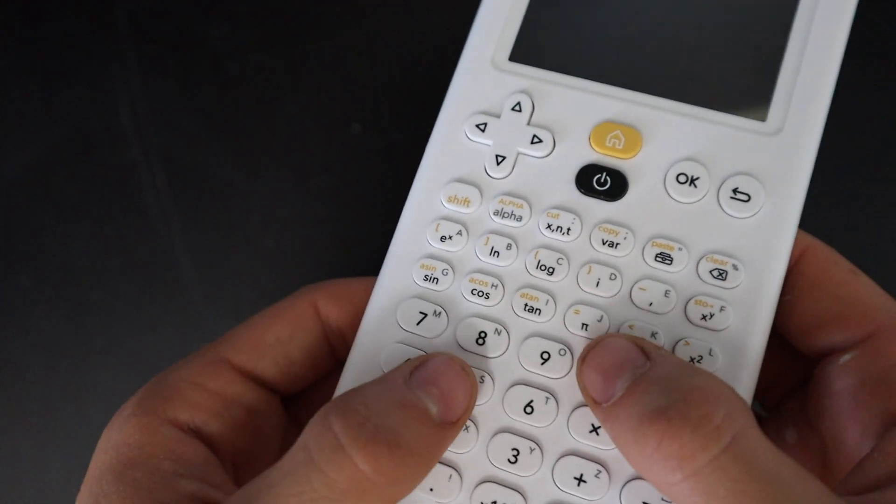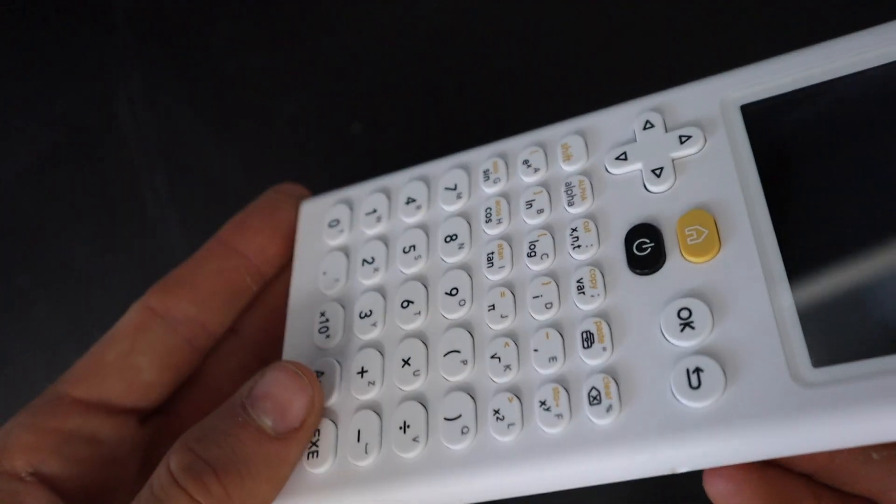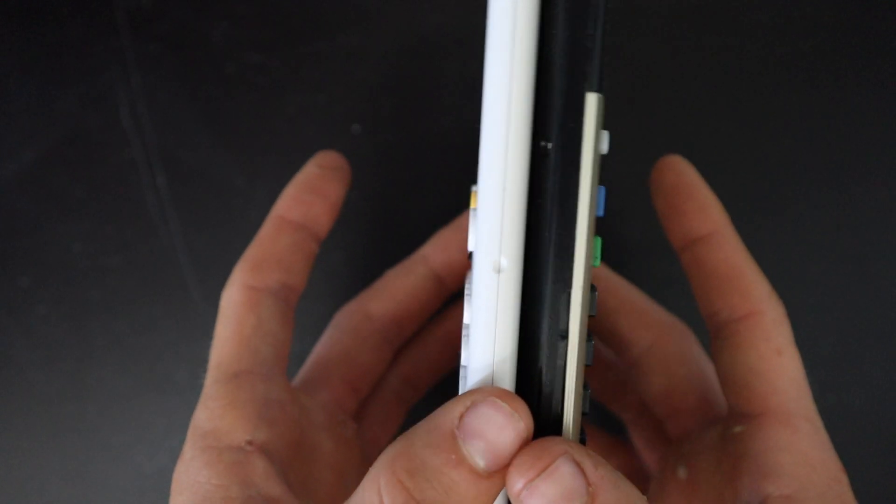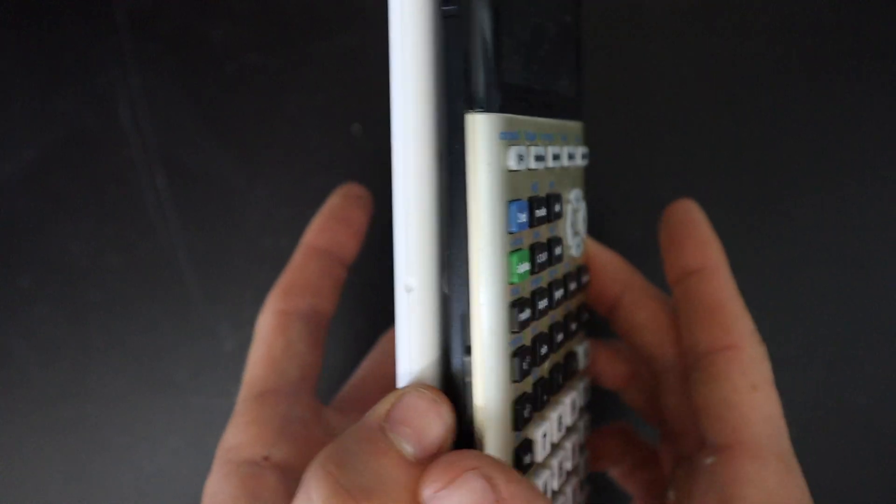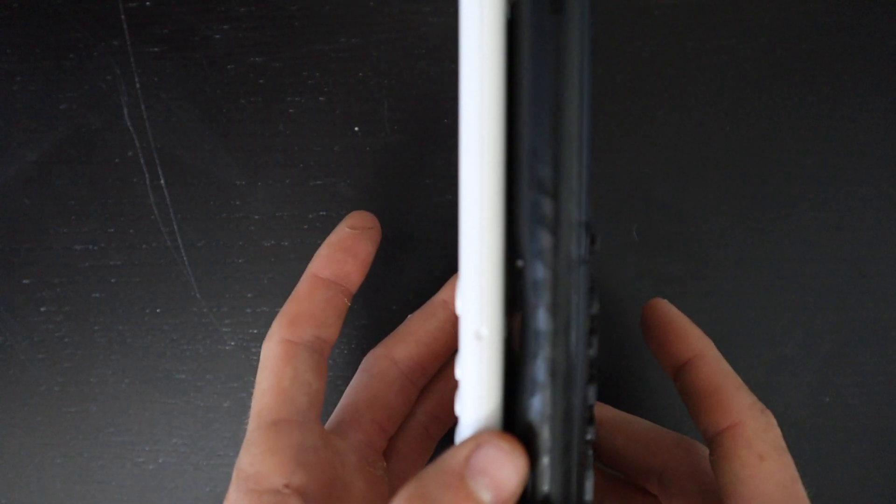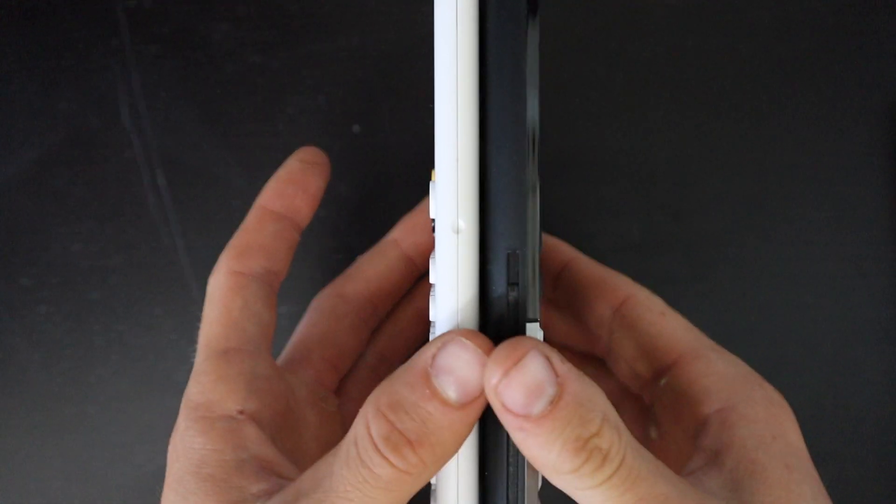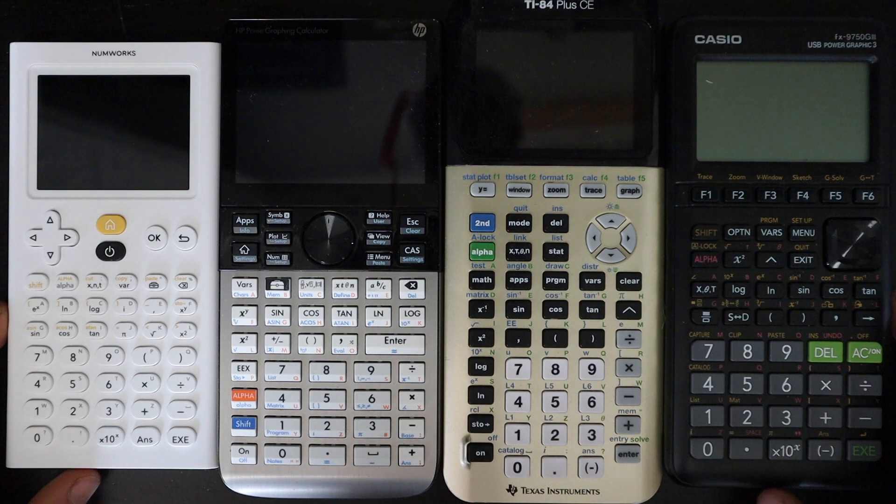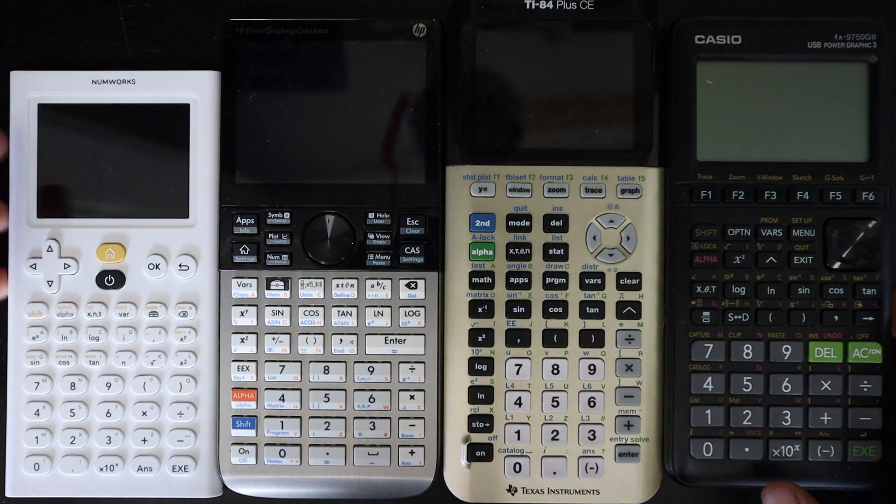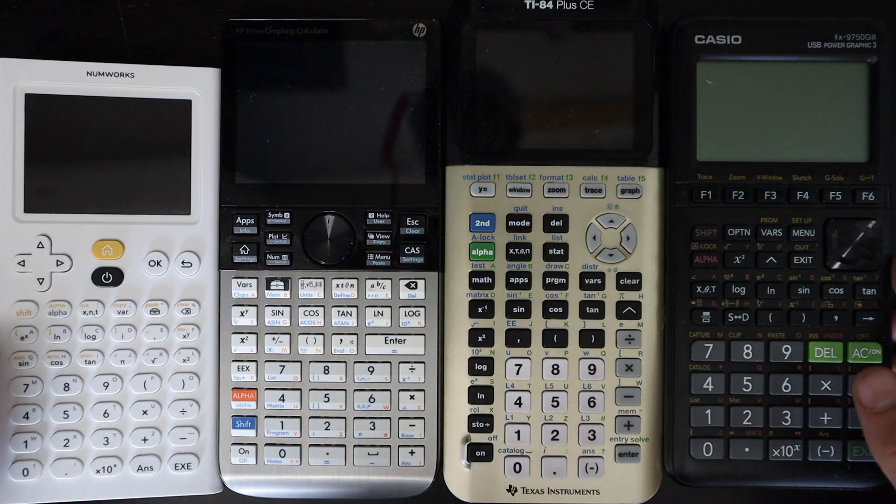The buttons are pretty nice. They don't make any serious shaking sound or anything. They don't feel like cheap plastic but they are nothing special compared to most other calculators. Just to give you an idea of thickness, here is the NumWorks next to the TI-84 Plus CE and then next to the Casio fx-9750 generation 3, and then here it is next to the HP Prime.